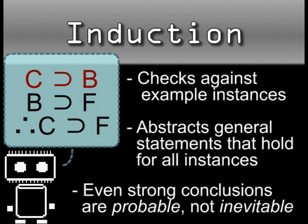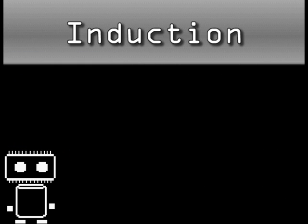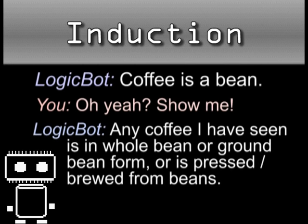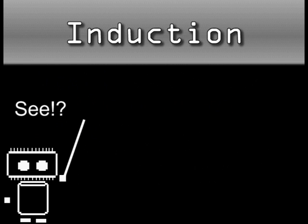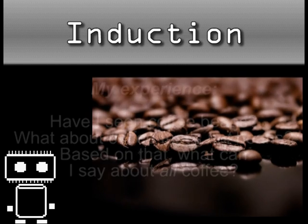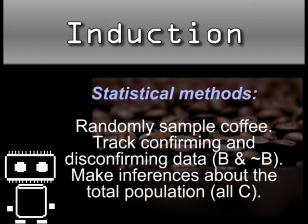Such claims are probabilistic and open, until I can demonstrate that they are false, and arguments that take this line of reasoning are inductive. For instance, I can't demonstrate that my first premise is true of all coffee ever, but I can state things that probably hold, which requires inductive reasoning. You might instinctively perform inductive reasoning by checking against your own experience, but there are even more methodical approaches.